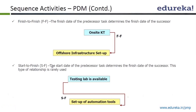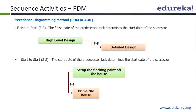The last one, start to finish, is very rarely used but it is a possibility. The start date of the predecessor task determines the finish of the successor. You cannot finish the setup of automation tools unless and until the testing lab start is available. A better real-life example: a security guard shift — the first guard's shift cannot finish until the second security guard's shift starts. Finish to start is very commonly used whereas start to finish is pretty rarely used.